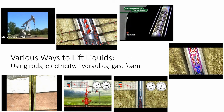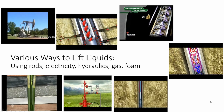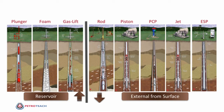In one shot, you're looking at all the major lift methods. The class will discuss different lift methods — their pluses, minuses, applicability, design considerations, and operational considerations. On the left side are plunger, foam, and gas lift; on the right side are rod pump, piston pump, progressing cavity pump, jet pump, and ESP. The methods on the right are primarily driven by energy supplied from the surface to a device lowered inside the wellbore, while the methods on the left rely more on reservoir energy.